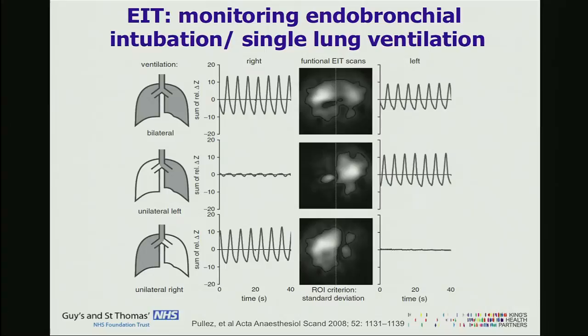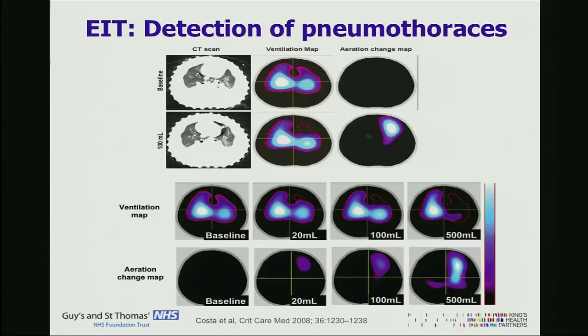We can also detect pneumothoraces in real-time. This is a pig study with a CT scan showing an EIT image of tidal ventilation of that lung. A small pneumothorax was created — 100 millilitres of air inserted in the pleural space — and you can see there is an area missing in ventilation. Subtracting one image from the other gives quantification of the pneumothorax. This can be done in real-time and in this study had 100% sensitivity in detecting a pneumothorax as small as 20 millilitres, providing continuous feedback during high-risk procedures such as central line insertion or recruitment manoeuvres.